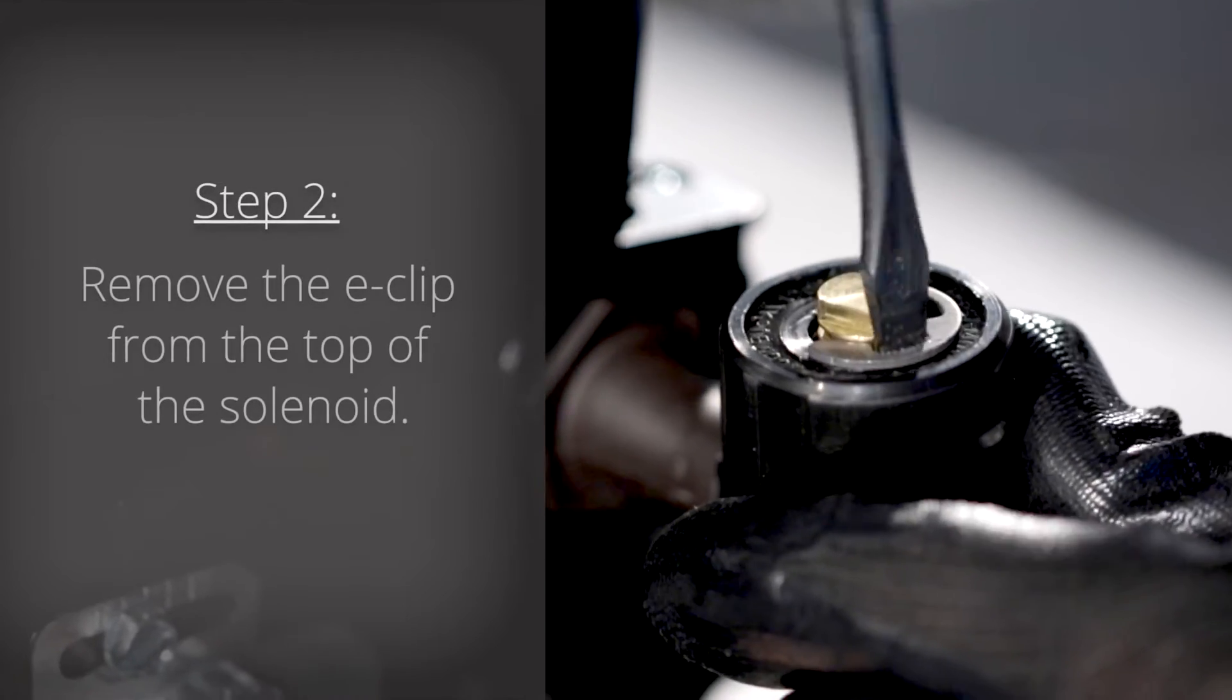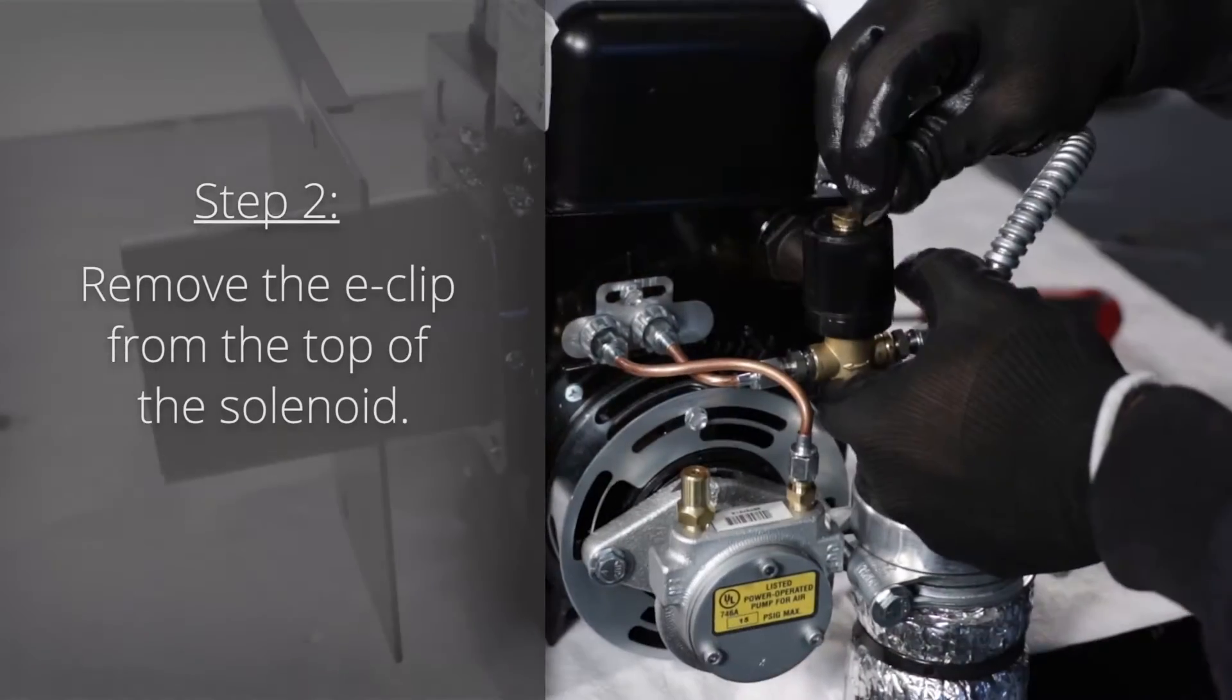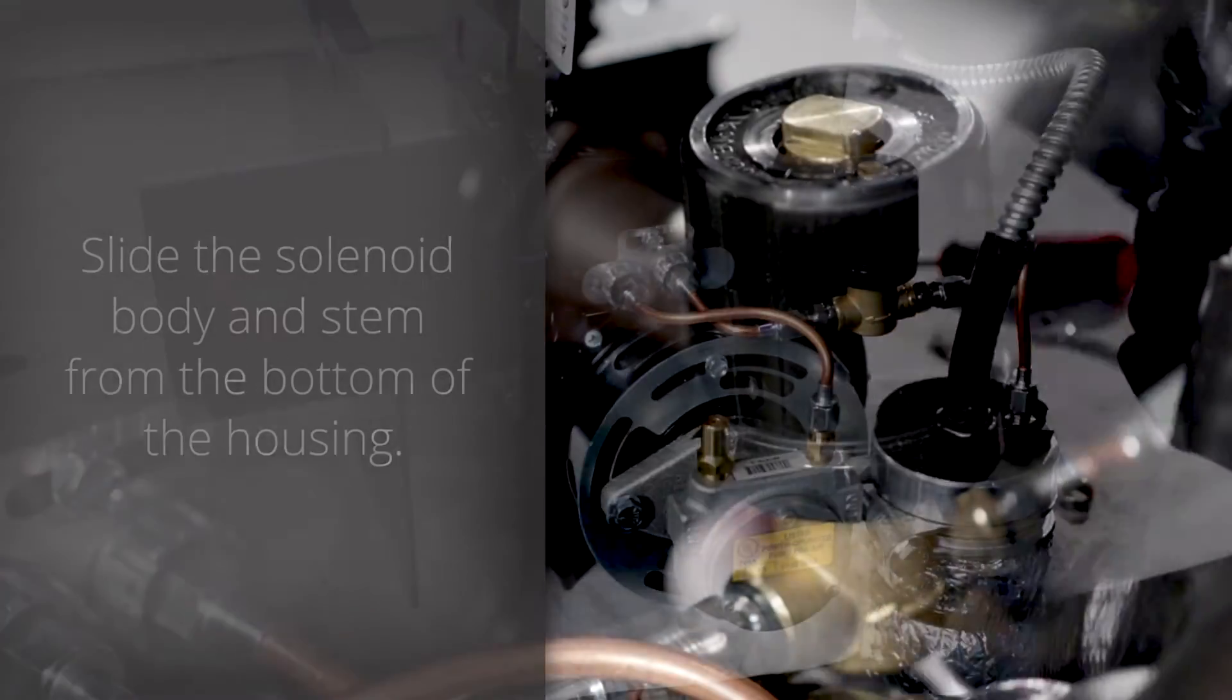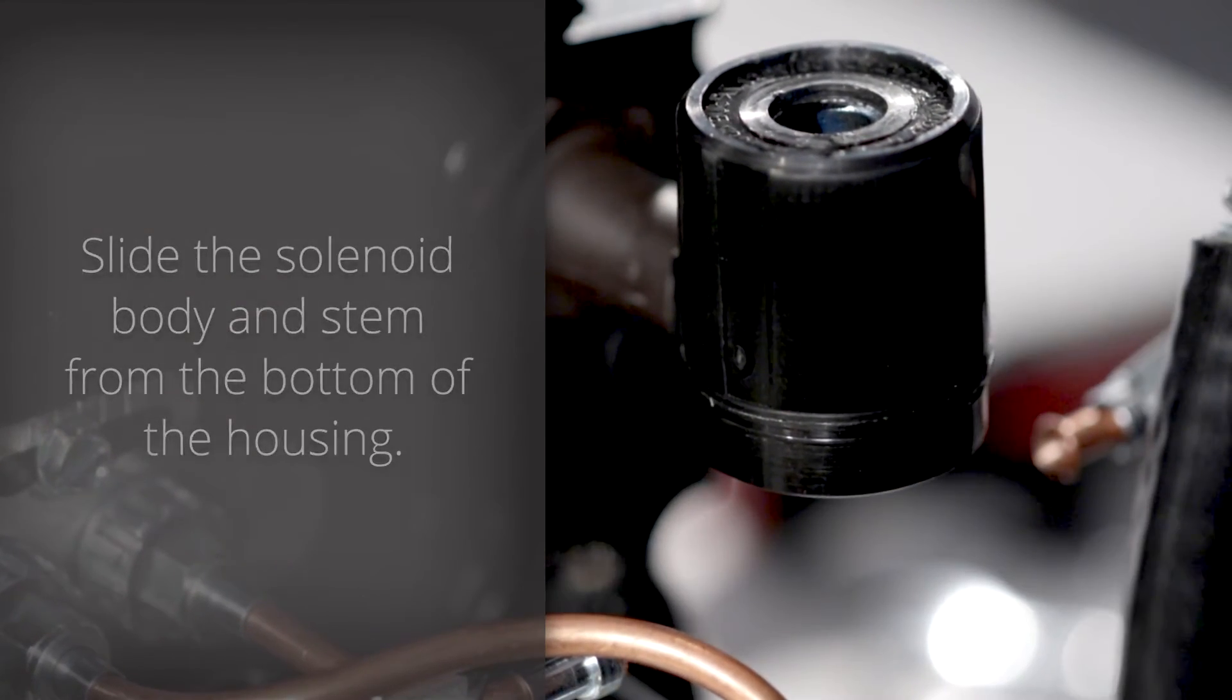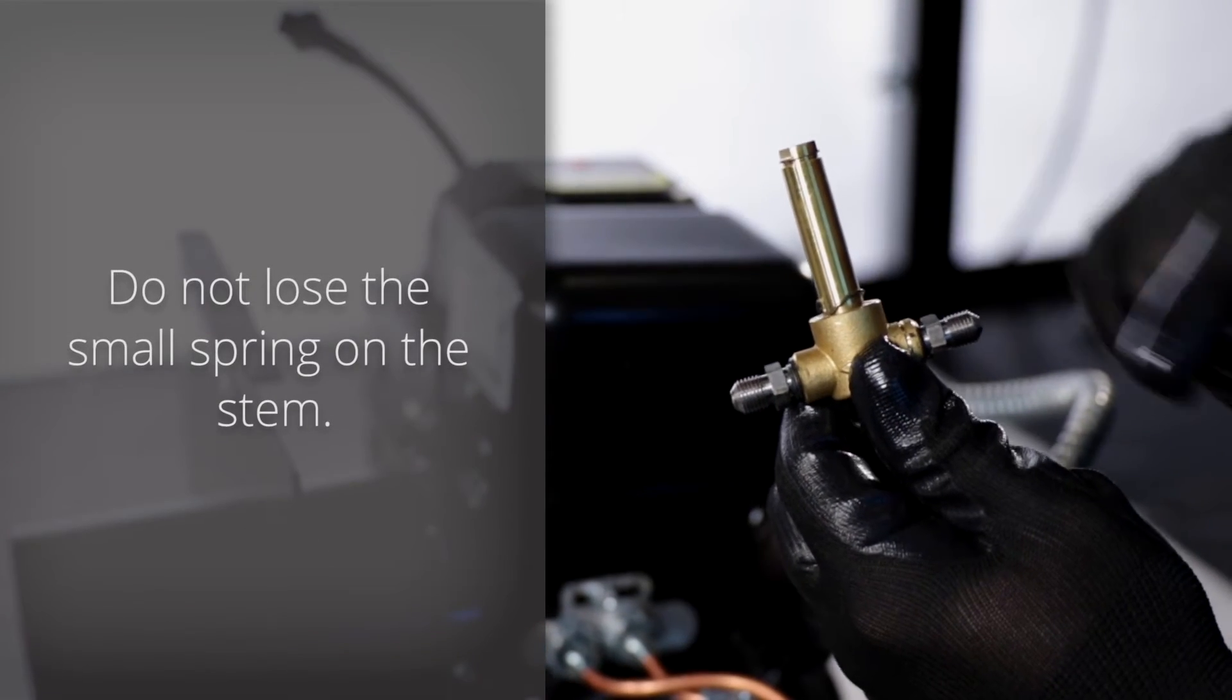Step 2: Remove the e-clip from the top of the solenoid. Slide the solenoid body and stem from the bottom of the housing. You may need to rotate the housing itself. Do not lose the small spring on the stem.